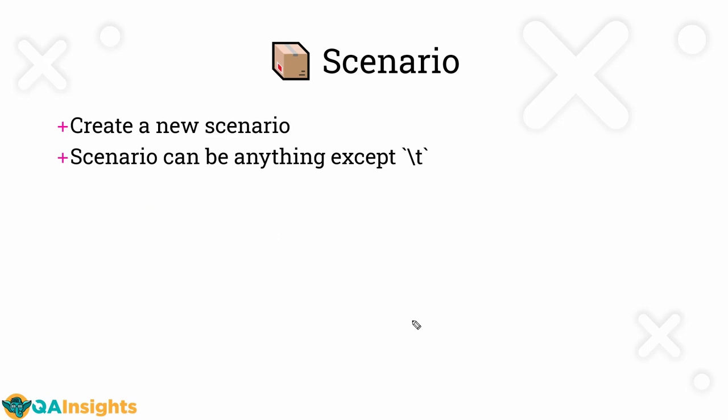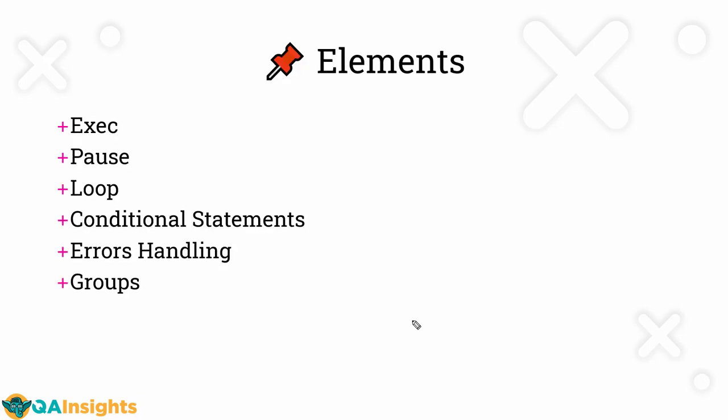You can create a new scenario using the scenario wrapper. You can name your scenario anything except slash-t, which is for stabilization, and you have to attach elements to your scenario. Gatling supports execute, pause, loop, conditional statements, header handling, and groups — these are the elements you can attach to the scenario.